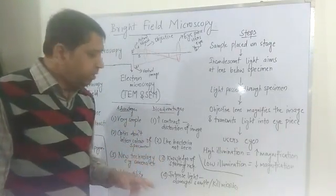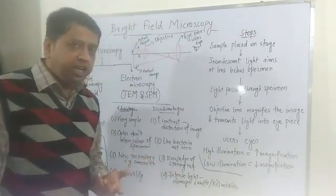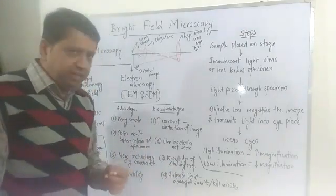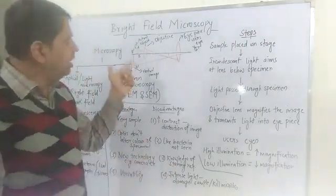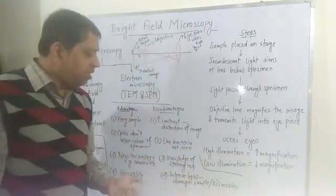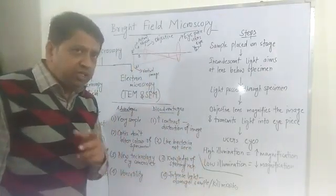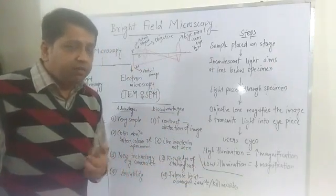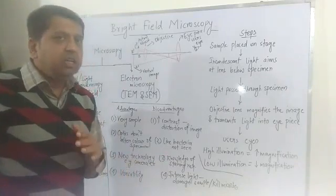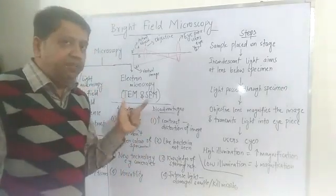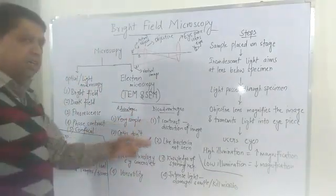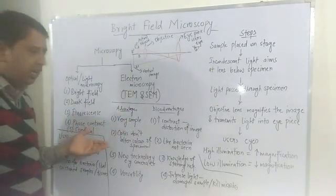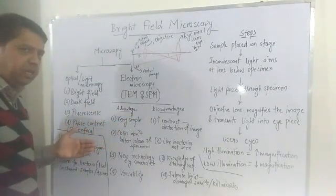Third, for staining, we must have knowledge of staining techniques, which is an essential requirement. Fourth, high illuminating light is used, which may destroy the sample or kill the microbes if we want to observe them live in their natural habitat. These are the advantages and disadvantages associated with this technique.